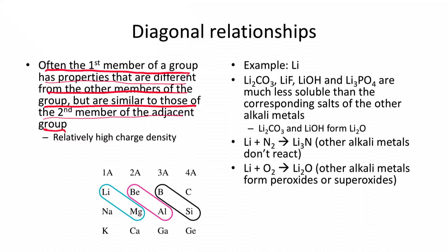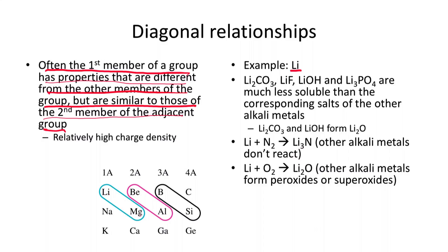As an example, let's look at lithium. Lithium can form carbonates, fluorides, hydroxides, and phosphate salts that are much less soluble than the corresponding salts of other alkali metals. Going back to solubility rules, things like sodium carbonate, sodium fluoride, sodium hydroxide, and sodium phosphate are all soluble in water — and they are. But the lithium versions of these compounds are really not soluble at all, because lithium behaves more like magnesium.